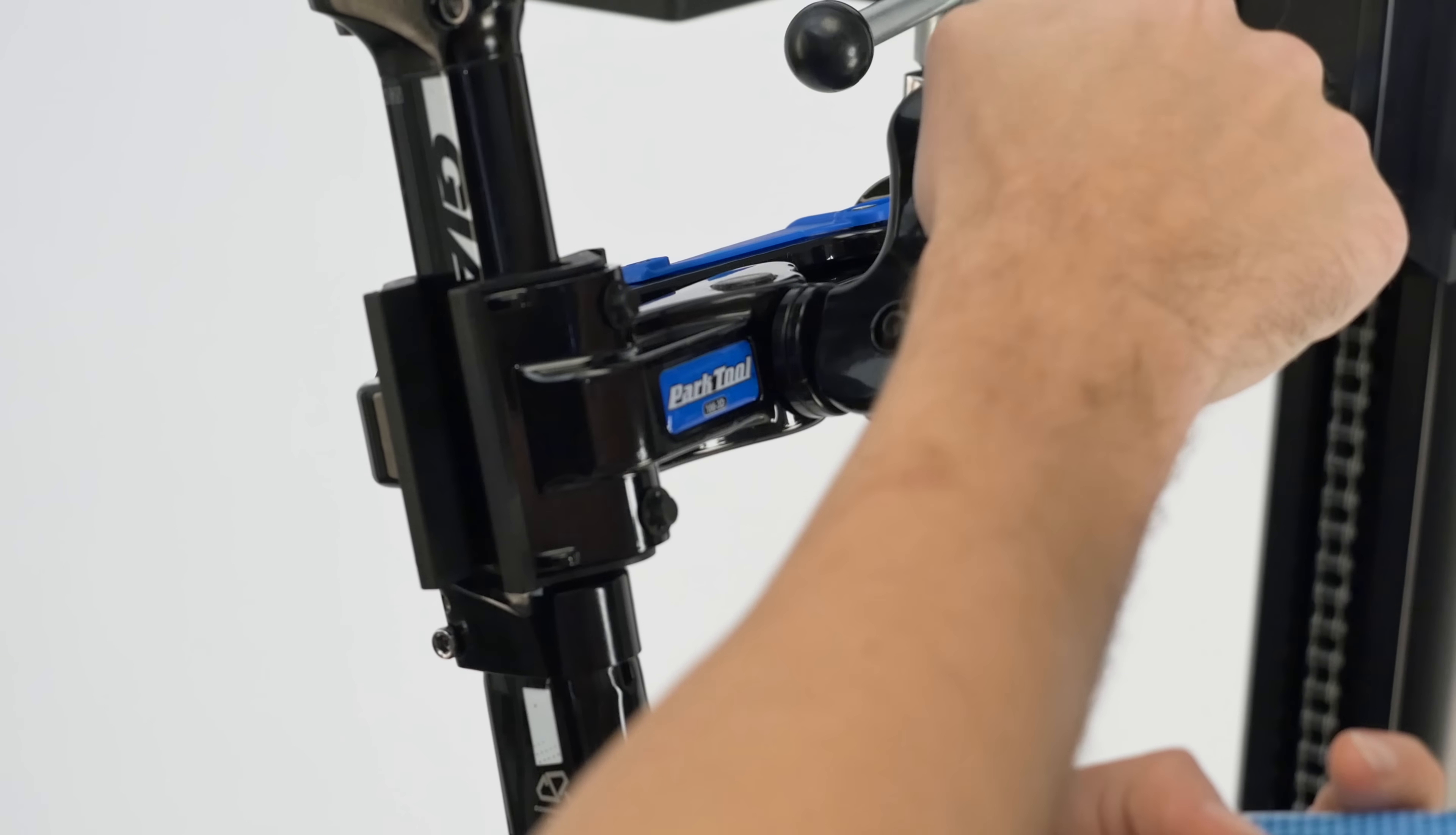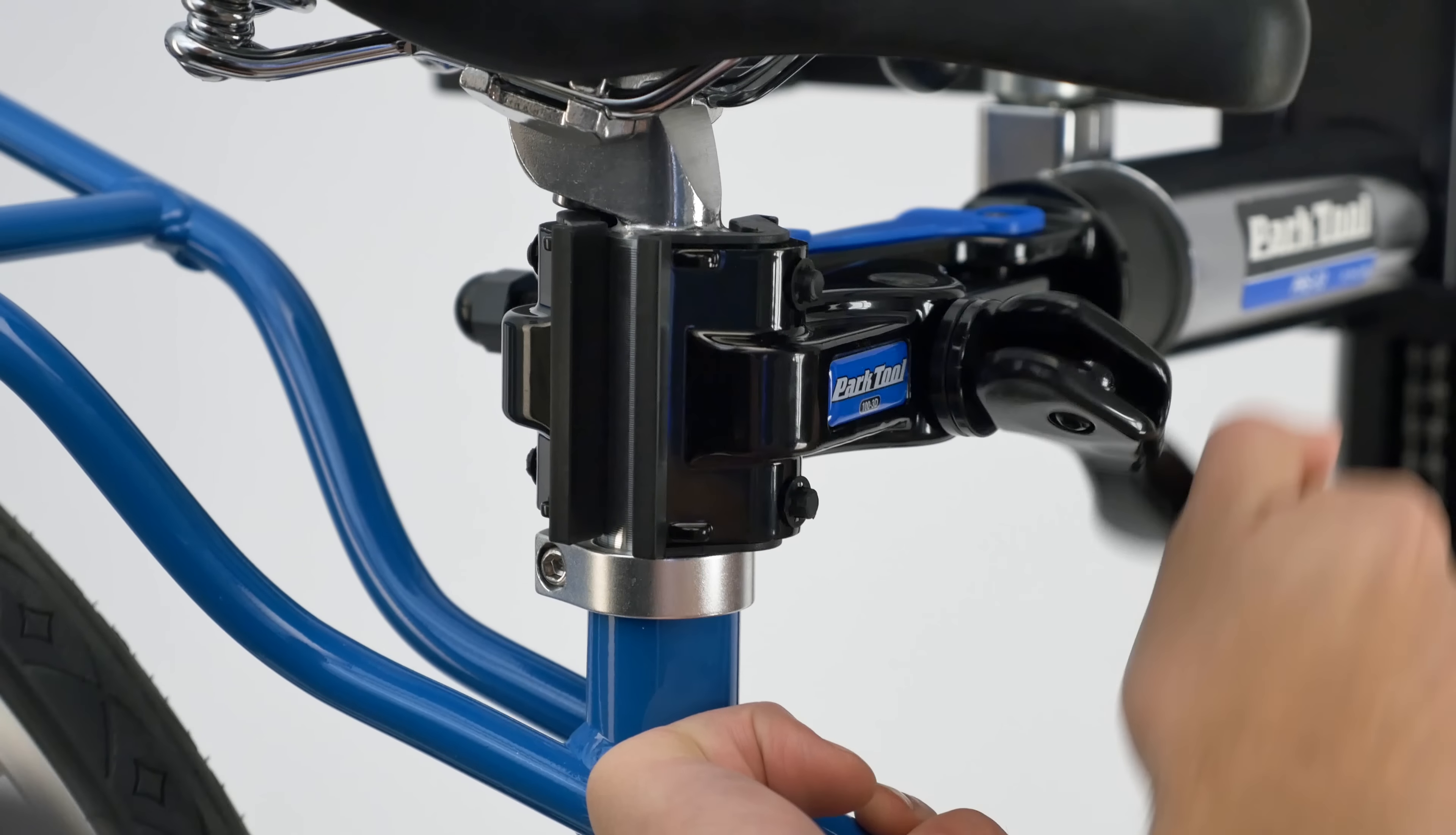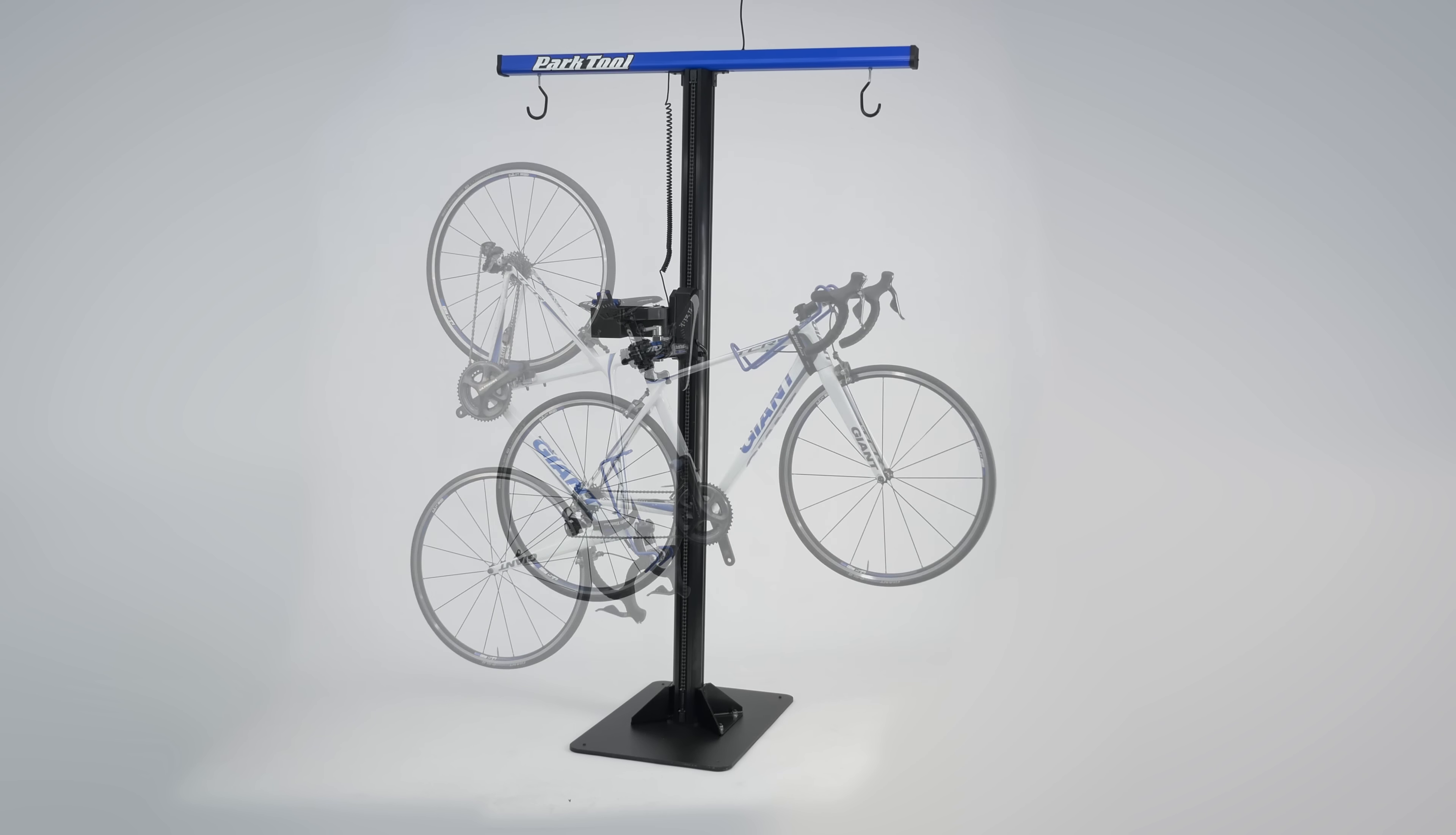The 100 3D Micro Adjust Clamp grips nearly any tube, including aero tubes, and its narrow clamping jaws fit into tight areas and short seat posts. The clamp rotates 360 degrees, allowing the bike to be positioned at any angle.